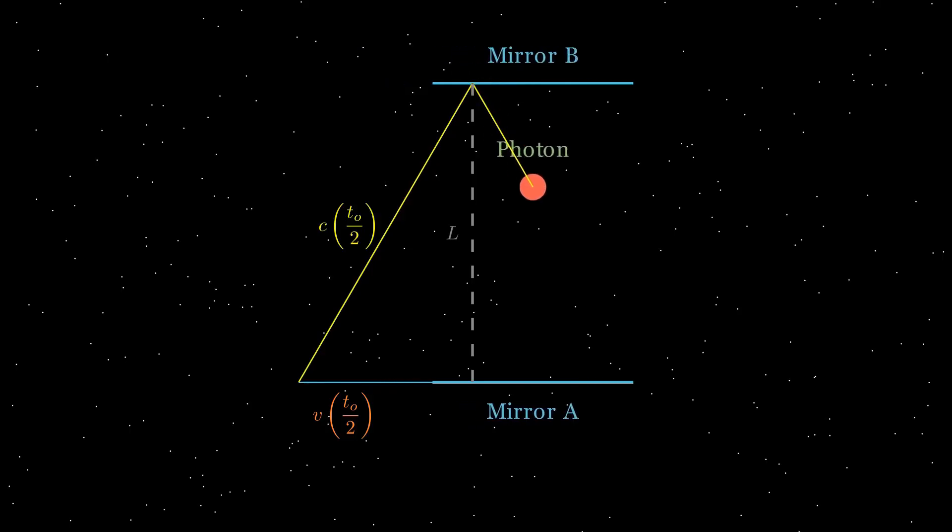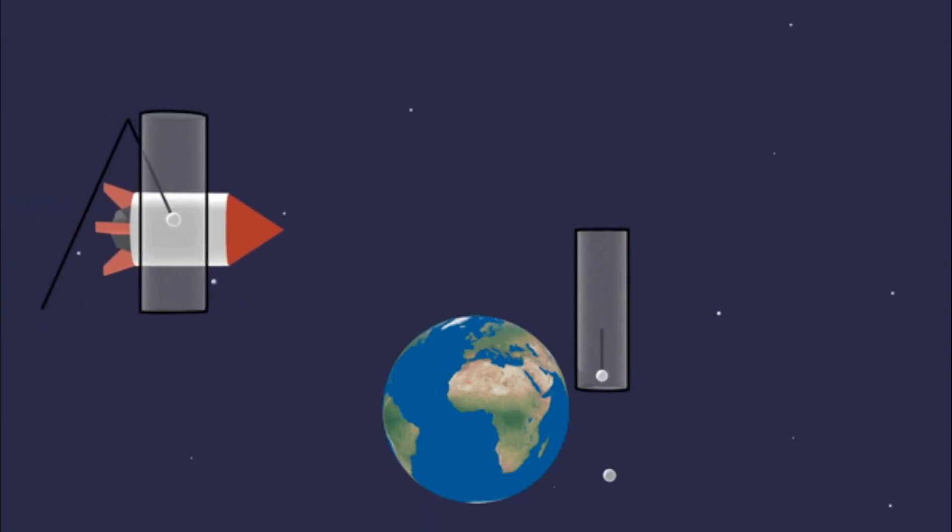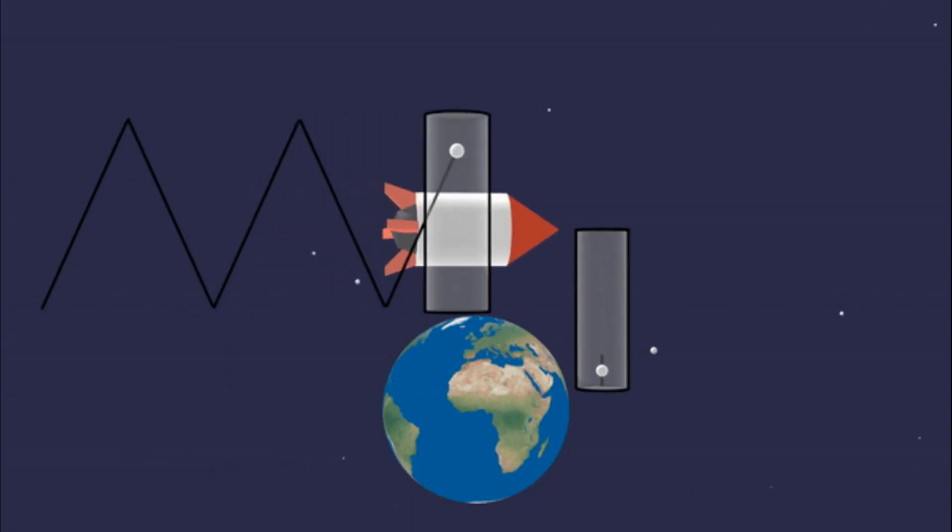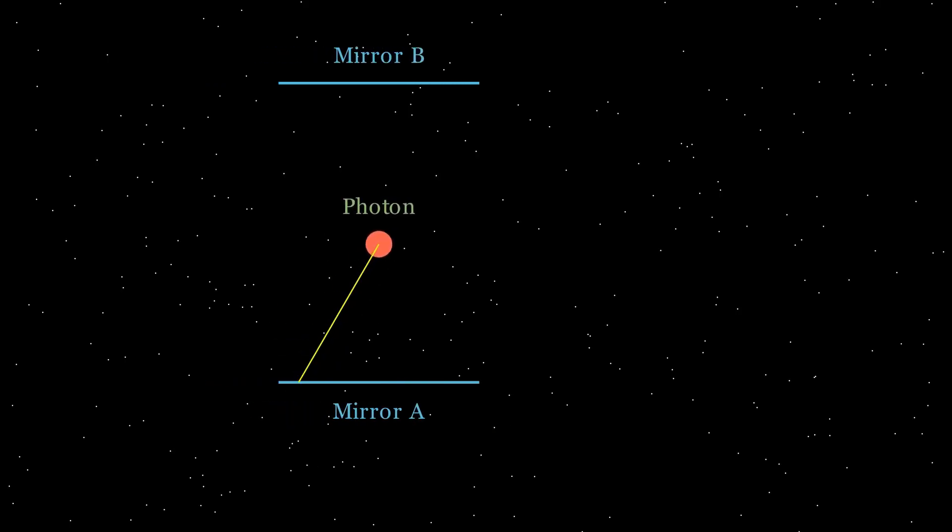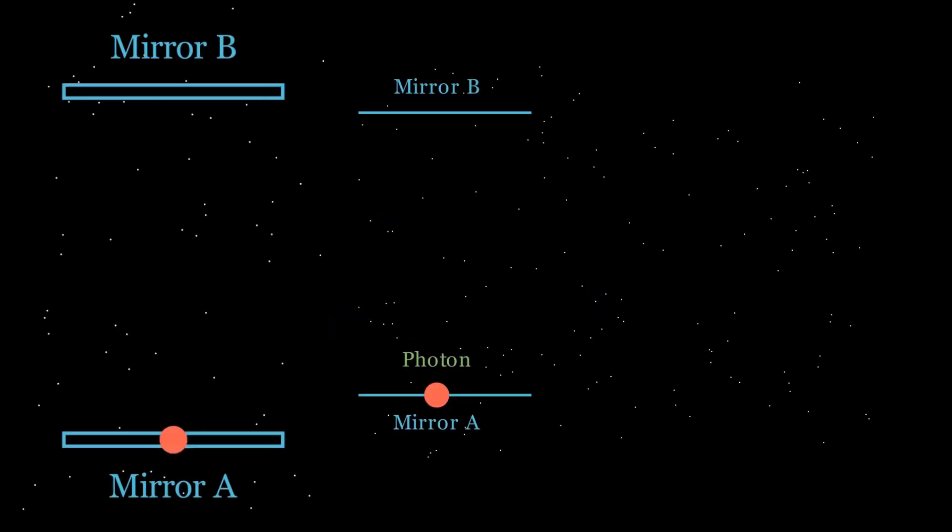The Earth observer sees a diagonal path while the man on the spaceship sees a vertical path. The diagonal path of the photon visible from outside the ship is not merely a geometric curiosity. It is a window into the fabric of space and time itself. The photon's longer slanted path shows how motion bends our intuitive sense of time and distance, revealing the universe a far stranger and more beautiful than it first appeared.